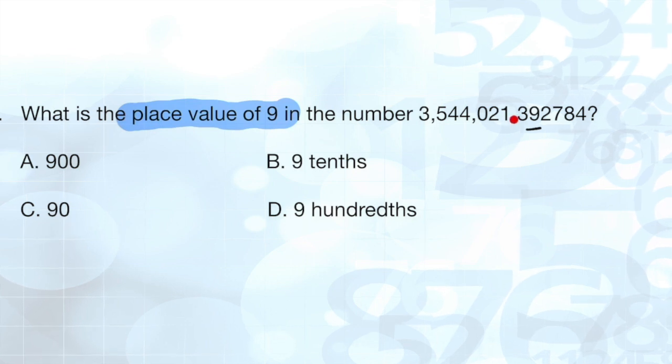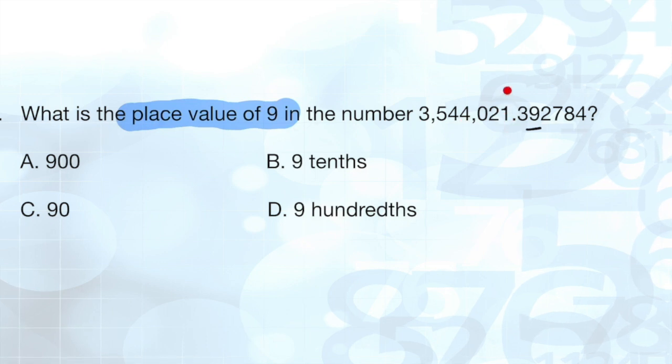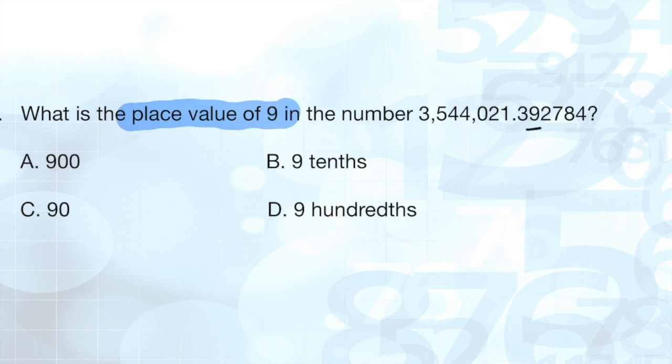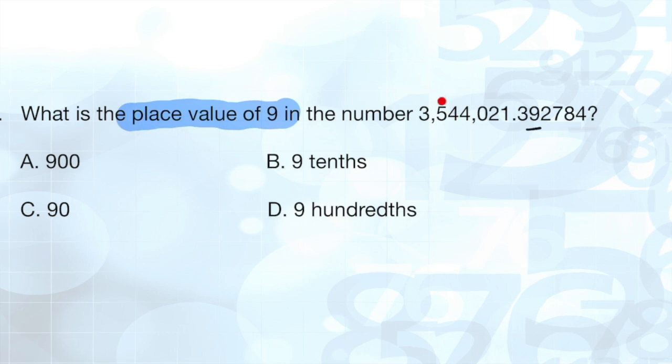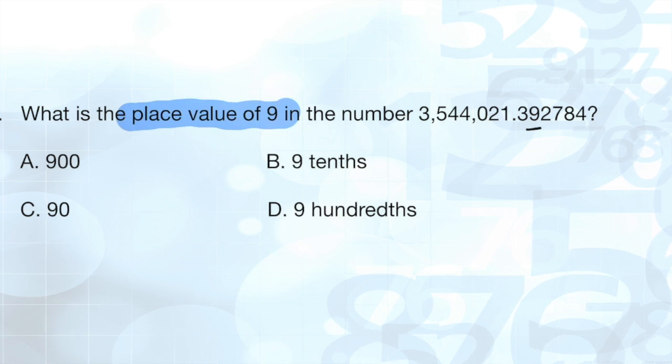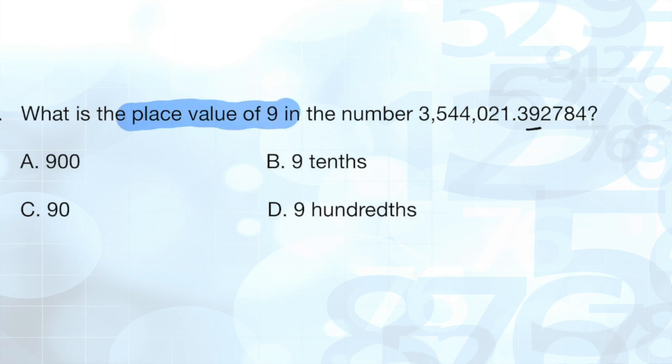So we have our decimal right here. Everything on the left-hand side of the decimal, starting from here, this would be our ones place, tens place, hundreds place, thousands place, ten thousands place, hundred thousands place, and this is our millions place. Now, anything to the right of the decimal implies that it's less than one, and it gets a TH. So this is our tenths position, this is our hundredths position.